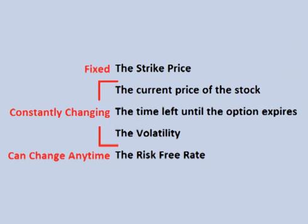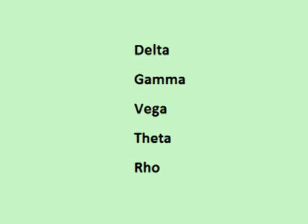You may remember from my videos on option pricing that there are only 5 inputs to the price of an option, or 6 if the option pays a dividend. The strike price is fixed, but the price of the underlying stock, the volatility, and the time left until the option expires are constantly changing, and interest rates can change at any time. Option Greeks isolate these inputs and look at the changes in option value when one or more of these inputs change.